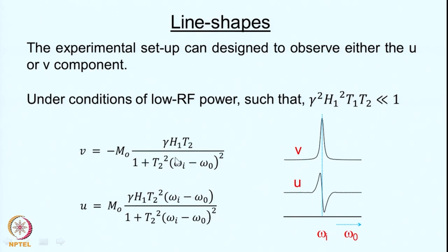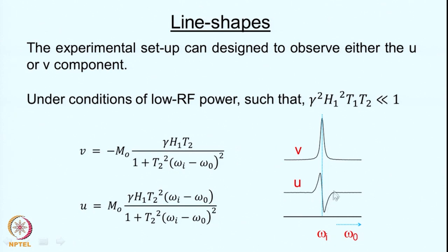These represent the line shapes we observe. If you plot the V component as a function of frequency ω₀ — since the precessional frequency is fixed by the nuclear spin and magnetic field and the RF frequency is what we vary — as we vary ω₀ the V function gives an absorption line. The U component gives a dispersive line shape, which has a positive component and a negative component with a long tail.